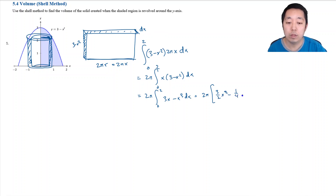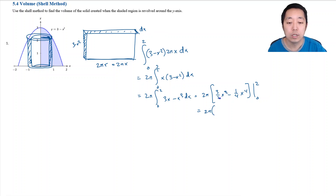This becomes 2π times [three-halves x squared minus one-fourth x to the fourth] evaluated from 0 to 2. The 0 doesn't contribute anything, so plugging in 2: three-halves times 4 is 6, minus 2 to the fourth (16) divided by 4 is 4. So that gives 2π times (6 minus 4), which equals 4π.